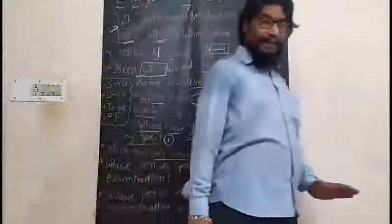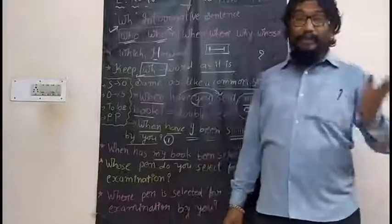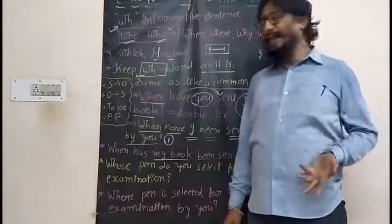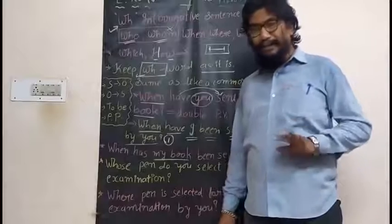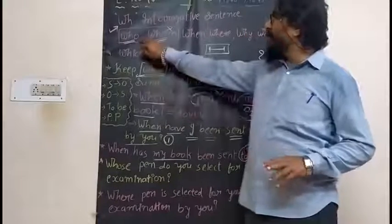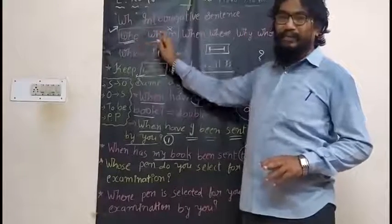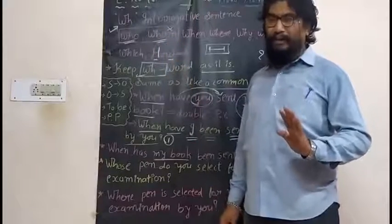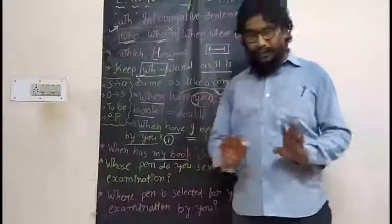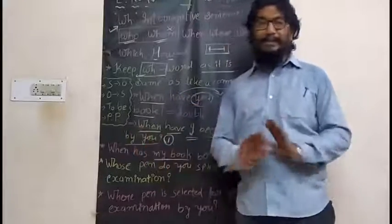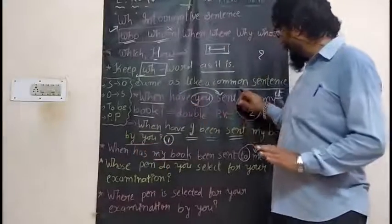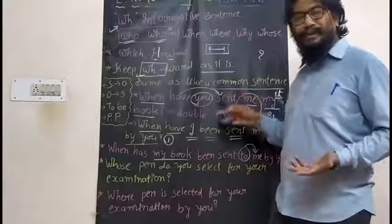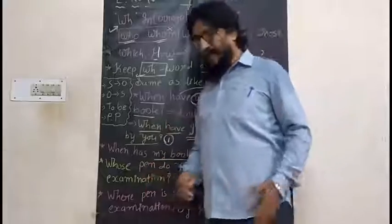In the WH interrogative sentence there also we have used double passive. What I have done? Nothing else — the WH word is kept as it is, and the remaining part of the program is followed as it is without any change, just like a common sentence. Where it is in the common sentence — on the first place — the same thing I have kept here.